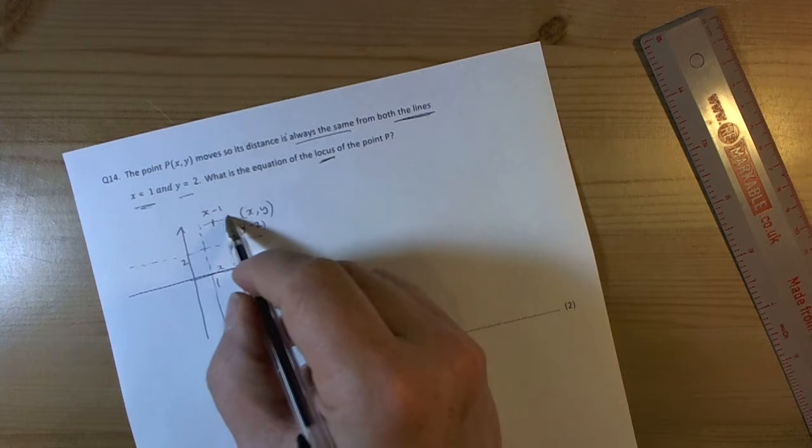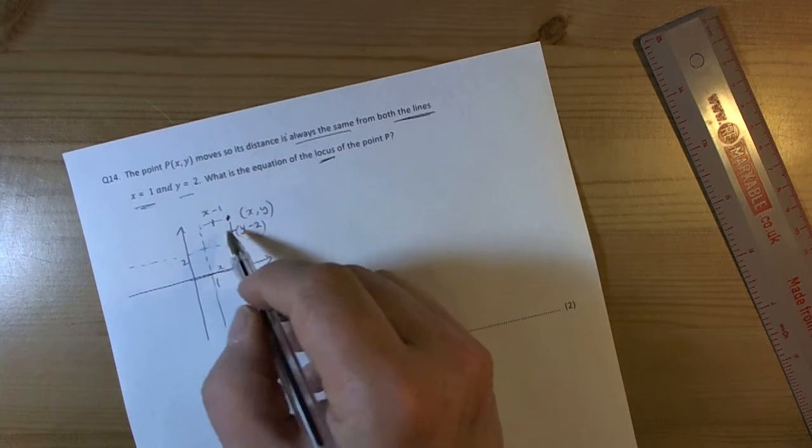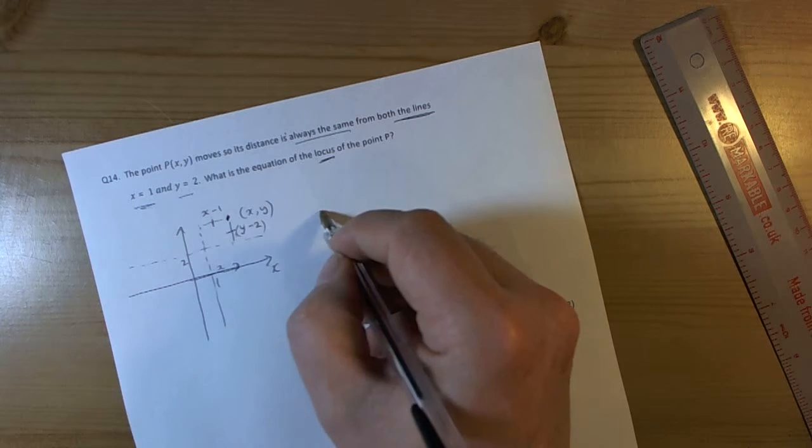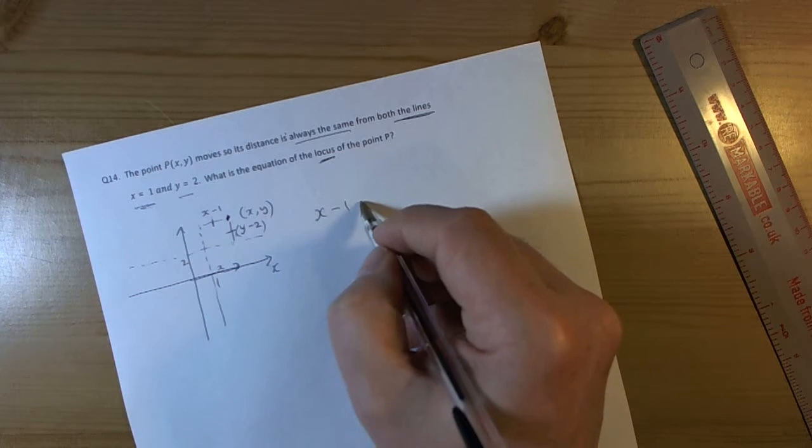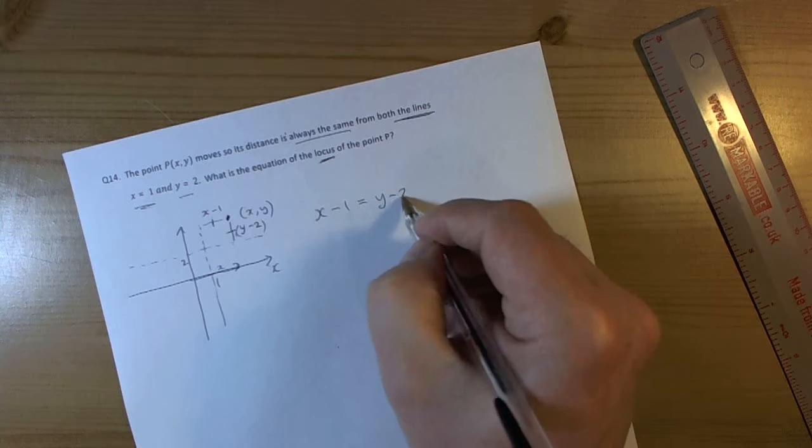Now they're telling us that this point moves so that these two distances remain the same at all times. So therefore we can say that the x minus 1 value must equal the y minus 2 value.